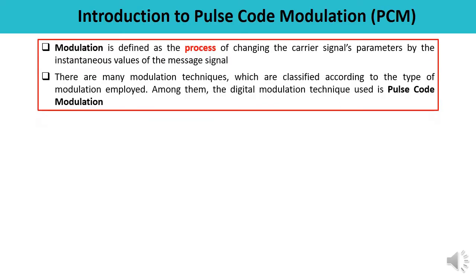First, let us revise what is modulation. Modulation is the process of changing a carrier signal's parameter. The parameter of the carrier signal is changed by the instantaneous value of the message signal. We have discussed the classification of modulation — there are various types: analog, digital, and others. Here we are going to talk about PCM, which is pulse code modulation, and this is the simplest form of digital pulse modulation.